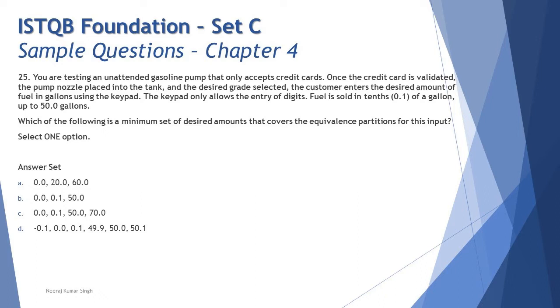The question is asking: what is the minimum set of desired amounts that covers the equivalence partitions? Which set of options will give you complete coverage of all the partitions? Let's look at the table here which will be helpful.